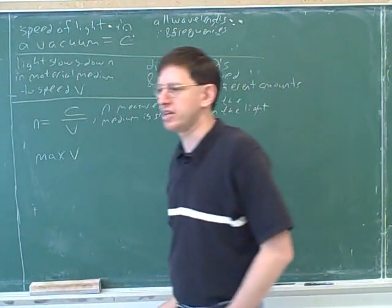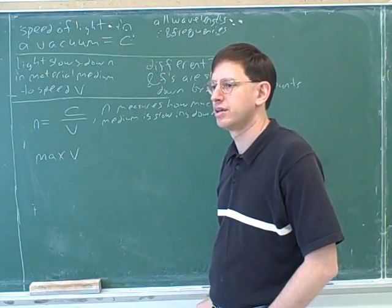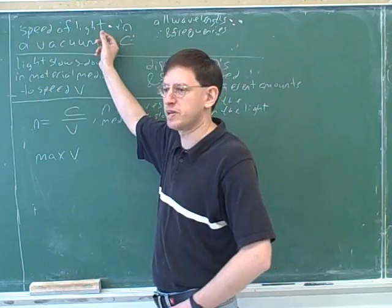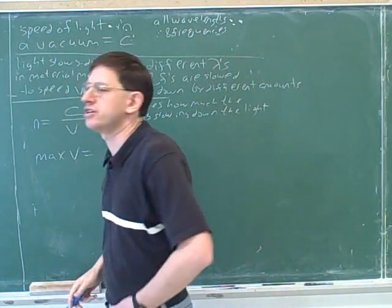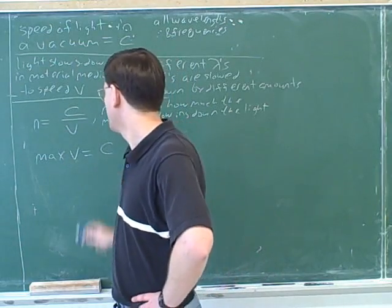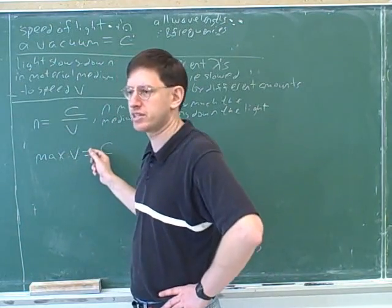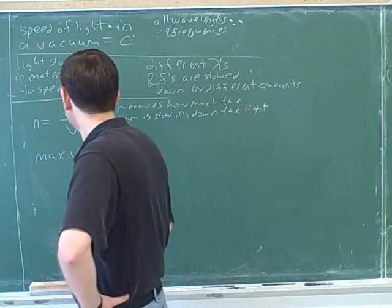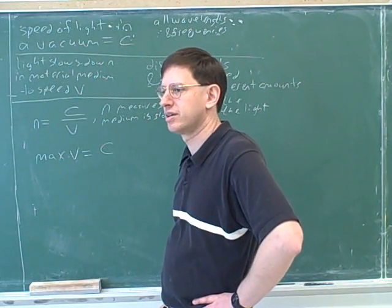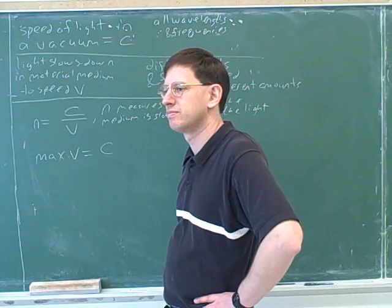What's the biggest that V could ever be? C. Nothing can go faster than the speed of light in the vacuum. V is our general symbol for the speed of light, while the fastest that could ever go is C. Does that mean that N has a minimum value or a maximum value? N has a maximum value.